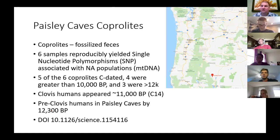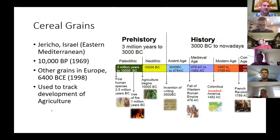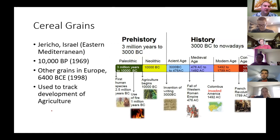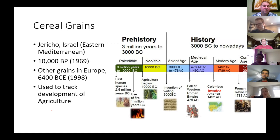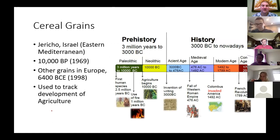We can look at the start of agriculture by dating cereal grains. Grains found in containers in Jericho, Israel were dated to about 10,000 years before present in a 1969 study. Grains found in Europe were from around 6,400 BCE, from a 1998 paper. By examining cereal grains from different locations on earth, we can track the development and spread of agriculture.